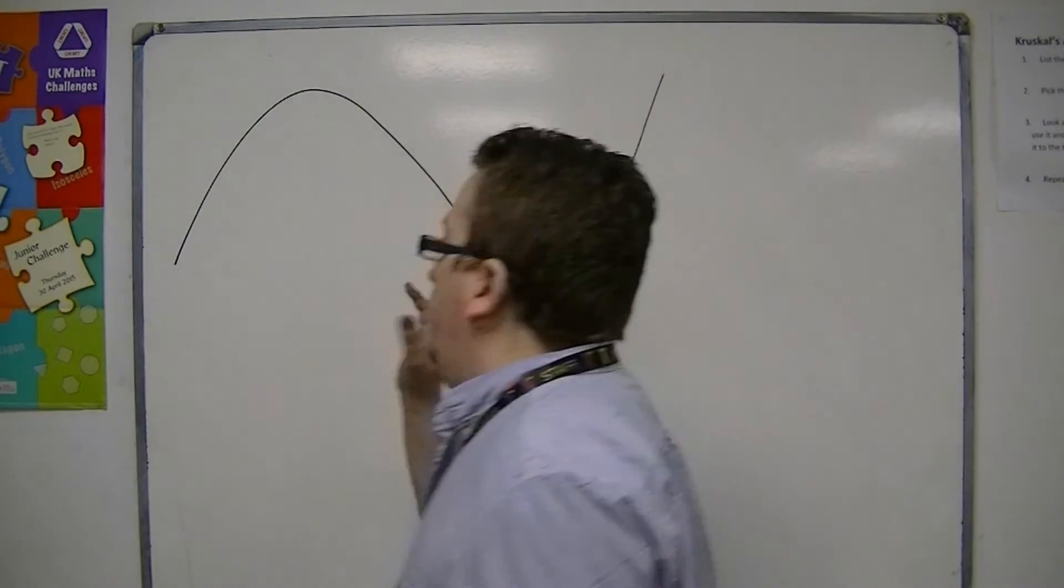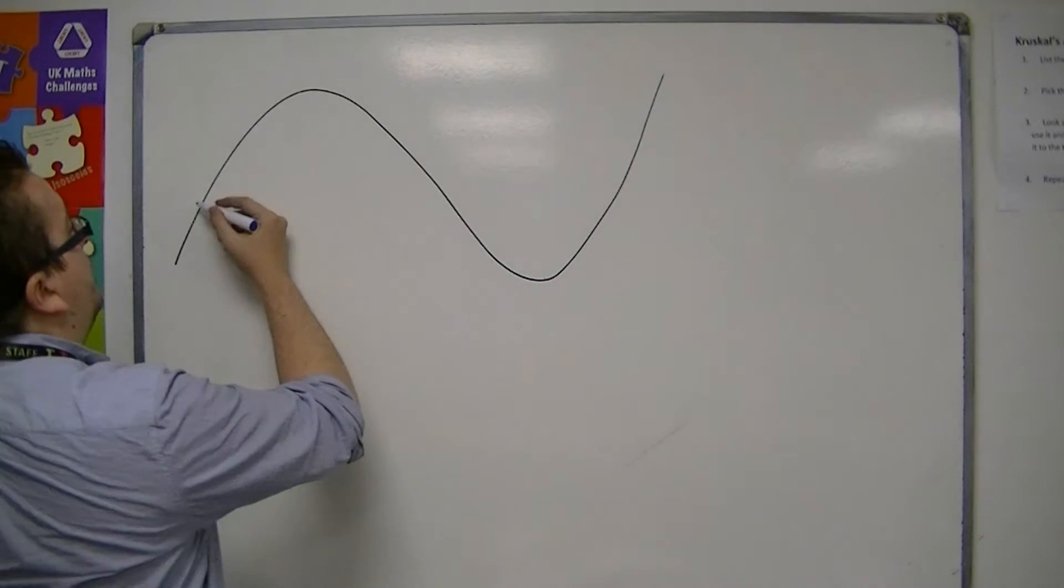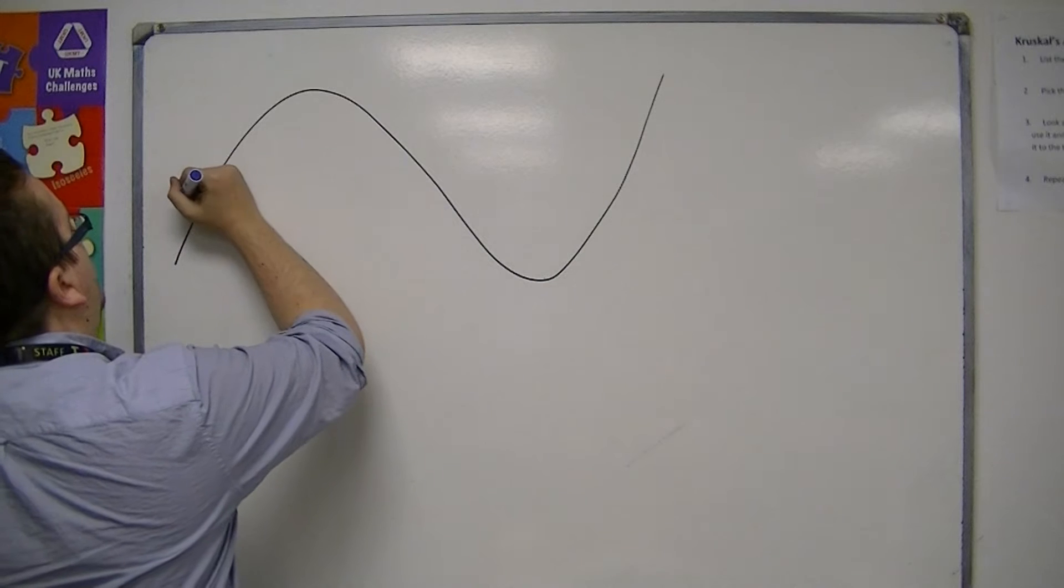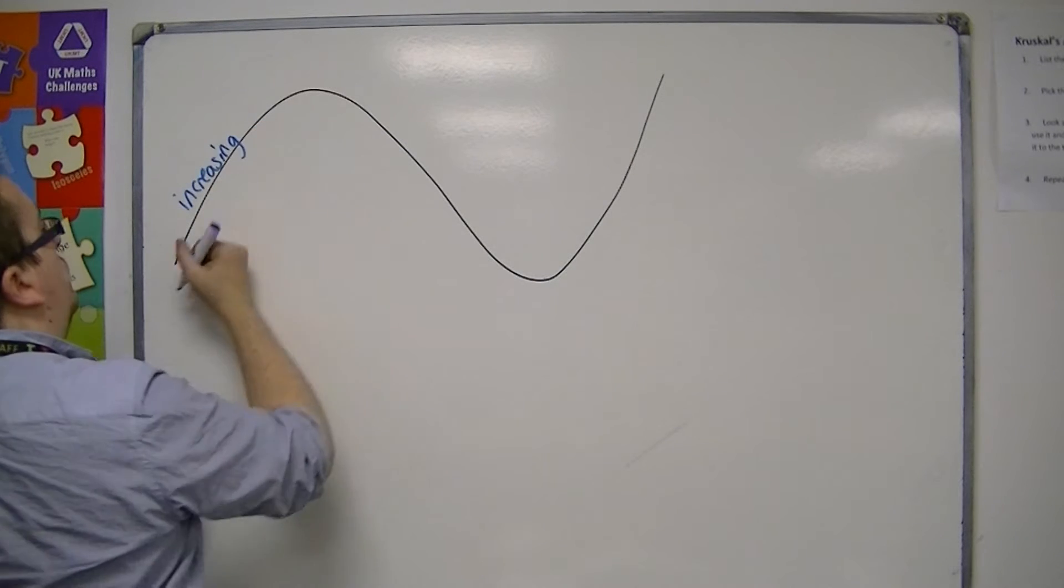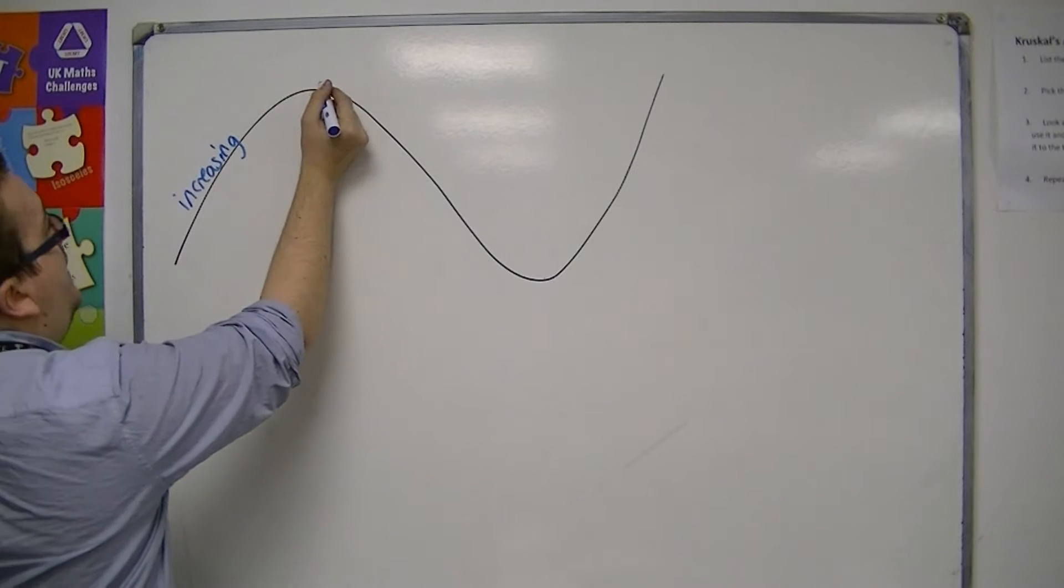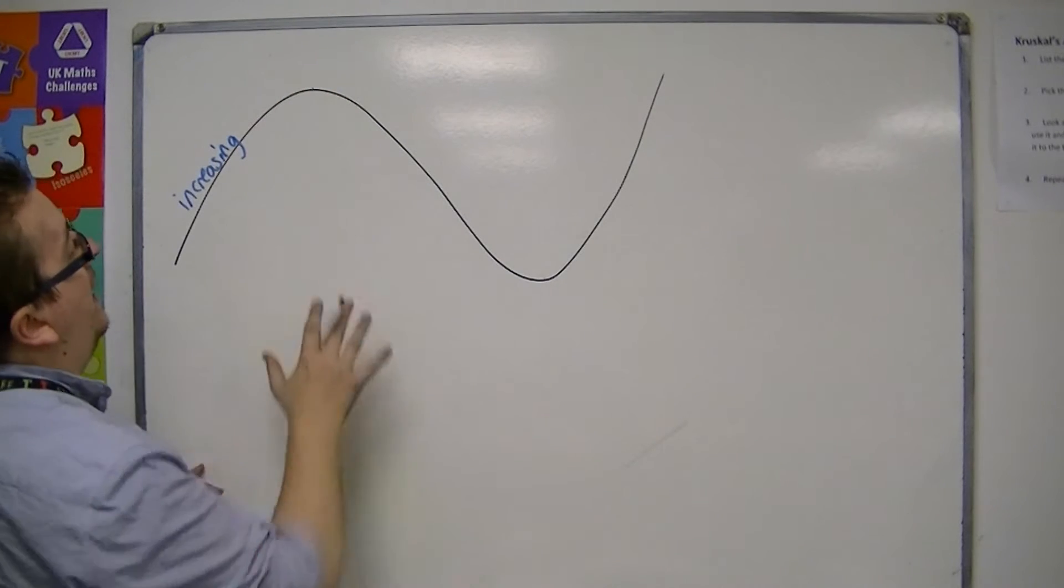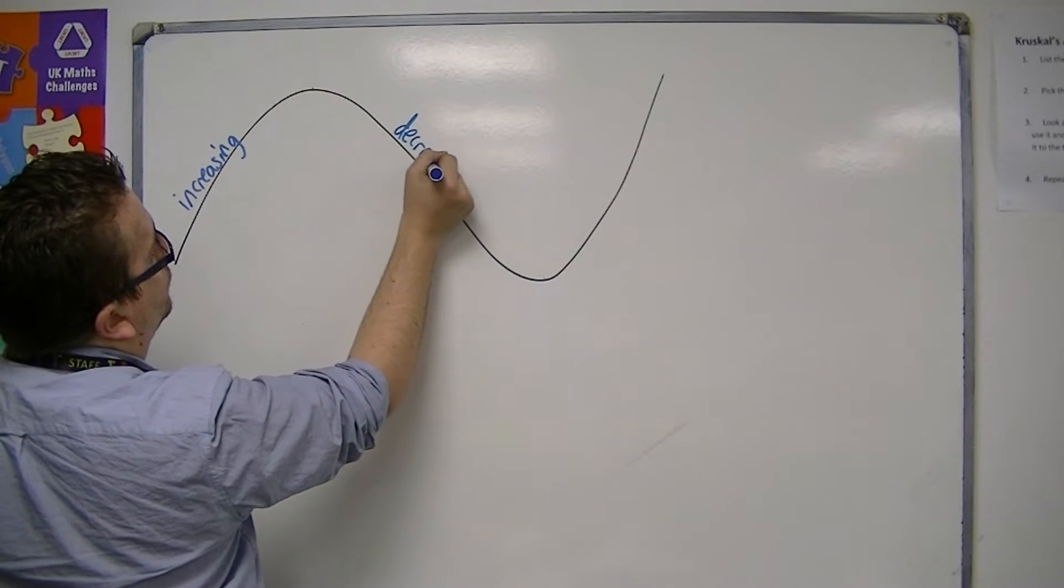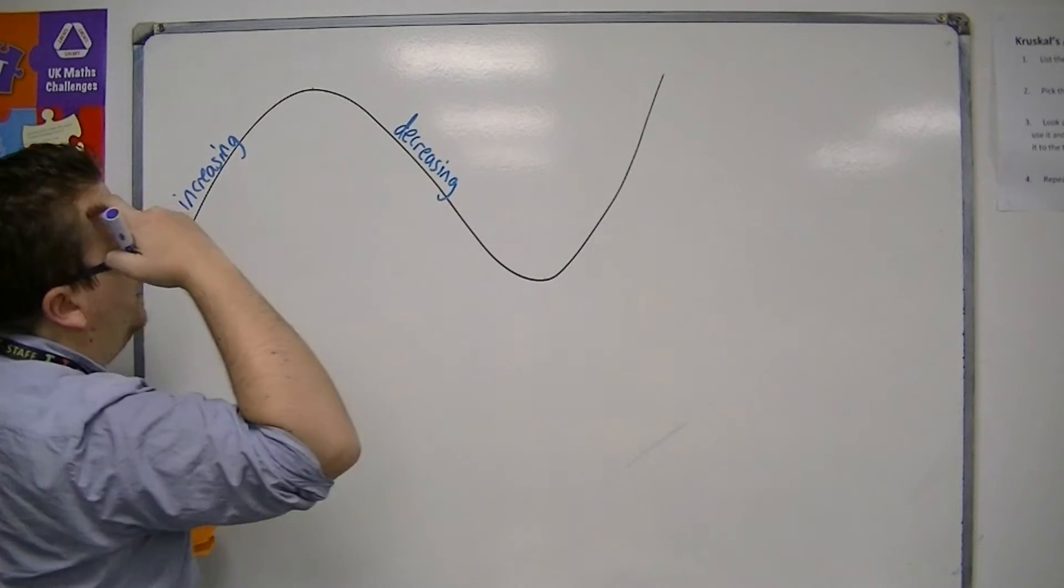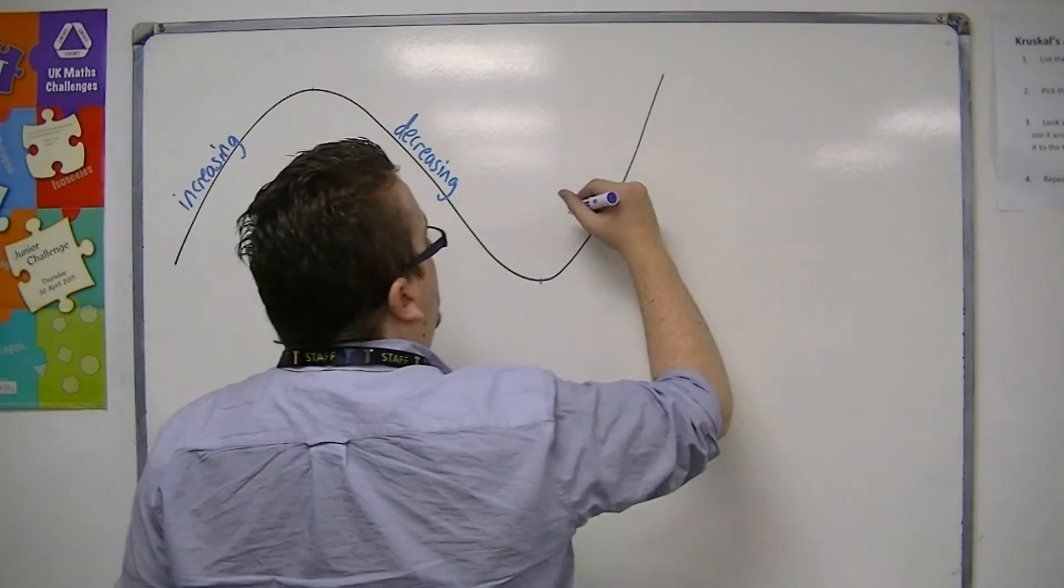So you can see that for this part of the curve, the curve is increasing. Well, it's getting larger. And then there's going to be this point where it stops increasing and then starts decreasing. And then it's going to reach another point and then it's going to start increasing again.